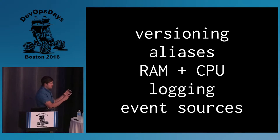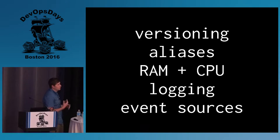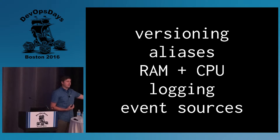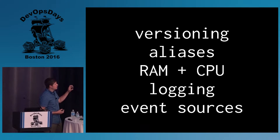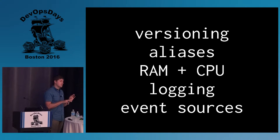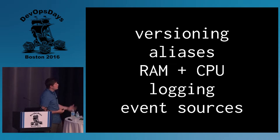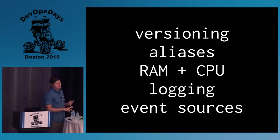Lambda does this basic thing, but on top of that it gives you all this other awesome stuff that will be important when you're actually running this in production. Versioning: you can version your functions and they're immutable. You can alias those versions — so version 5 of my function is the 'beta' alias and you can redirect it, saying now version 6 is beta. You can select how much RAM and CPU is allocated — CPU is tied to RAM, so if you're running out of CPU you might need to bump the RAM. You get logging to CloudWatch, and Lambda functions can be triggered from DynamoDB updates, S3 updates, Kinesis streams, and more.